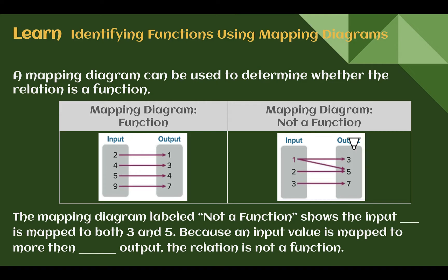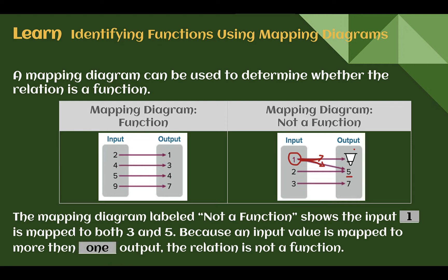Let's learn identifying functions using mapping diagrams. One way to determine if something's a function is using a mapping diagram. It's super obvious to see that the input should only point to one output. Here we have 1 pointing to 3 and to 5 — that's not a function. You may notice sometimes more than one number points to the same output, like 5 has two different things pointing to it. That's okay. You can have more than one button on a vending machine for the same brand of soda — they just can't give you something different each time you push it.